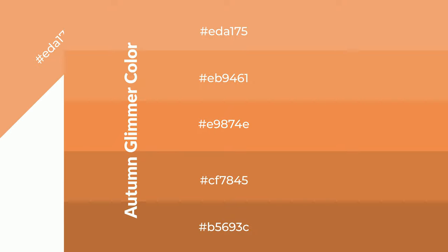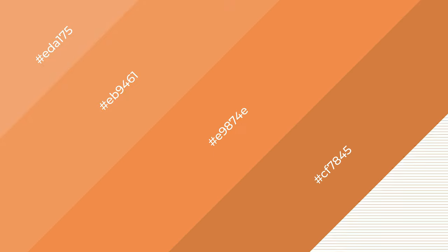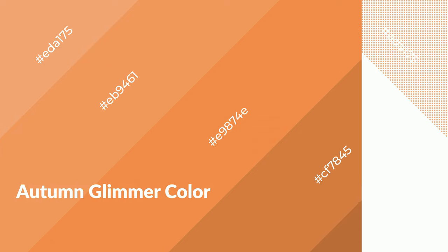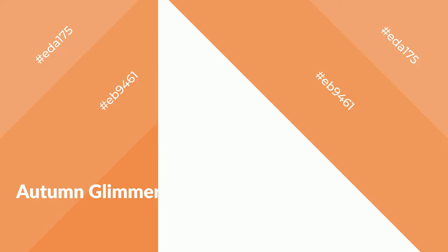To generate shades of a color, we add black to the color. Shades are used in patterns, 3D effects, and layers, and they create depth and drama. Autumn Glimmer is a warm color and it emits cozier and active emotions.